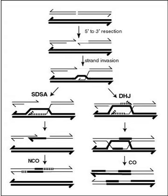B cells of the immune system perform genetic recombination called immunoglobulin class switching. It is a biological mechanism that changes an antibody from one class to another — for example, from an isotype called IgM to an isotype called IgG.